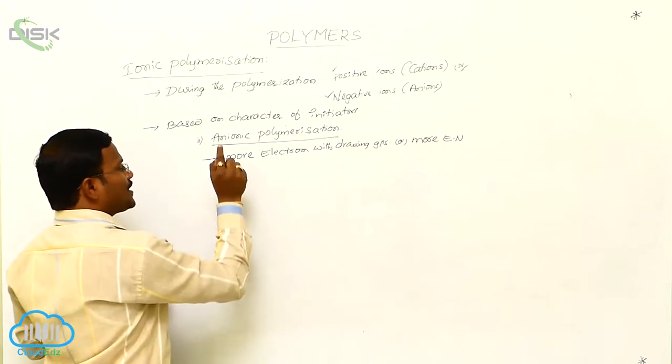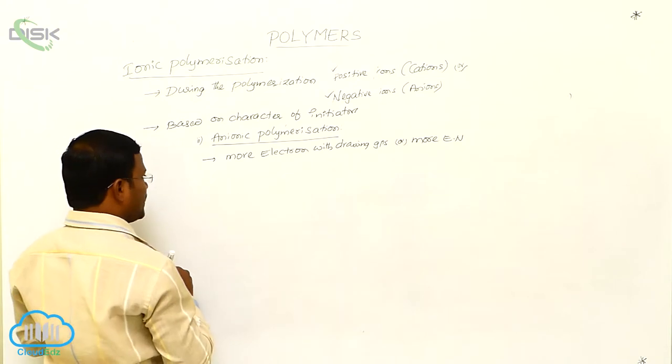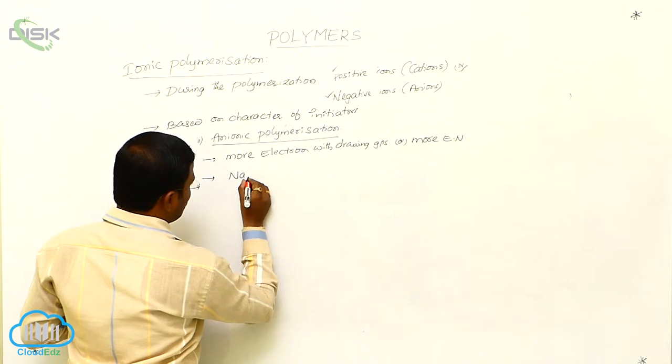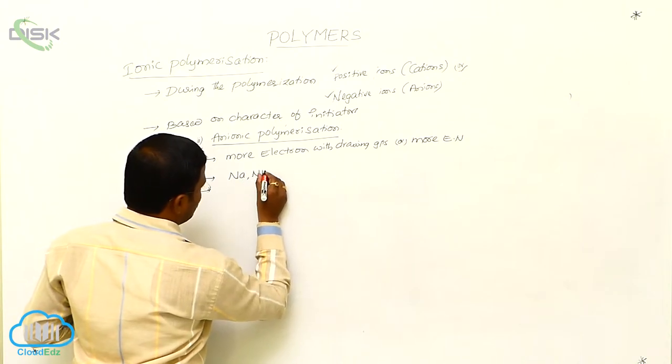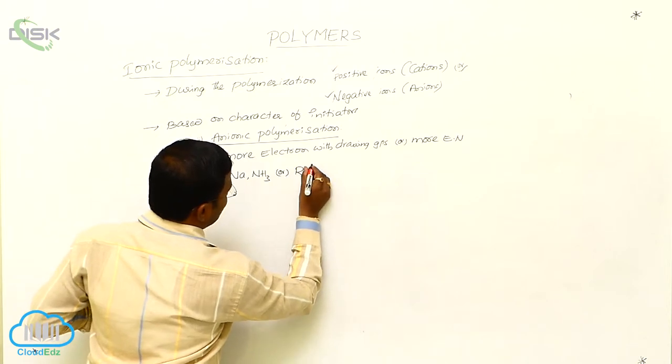Here we can write it as sodium in ammonia or alkyl lithiums. These two are good initiators for anionic polymerization.